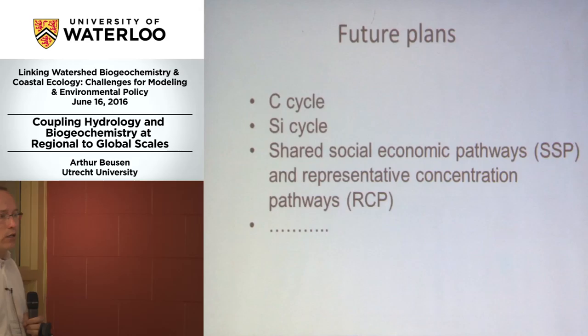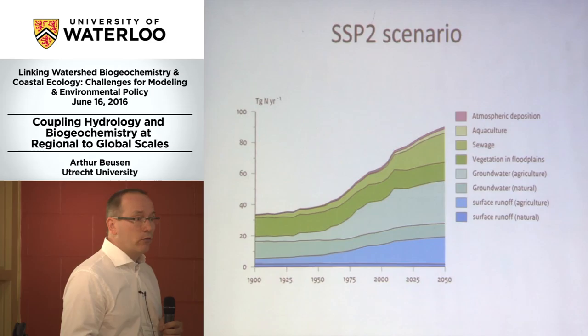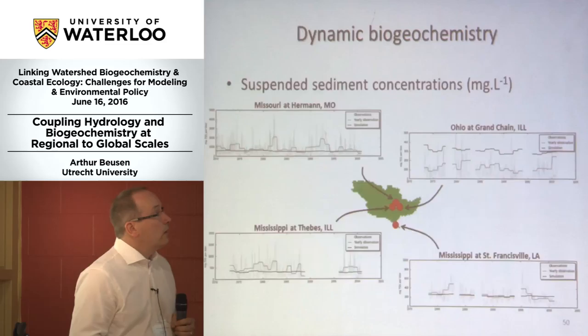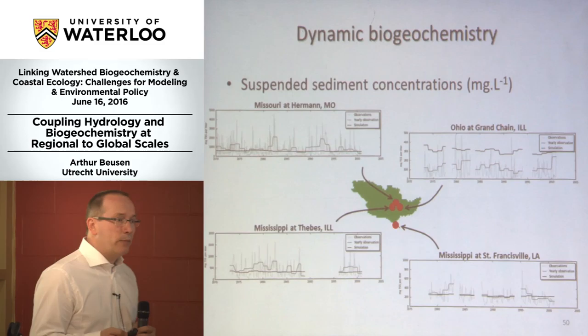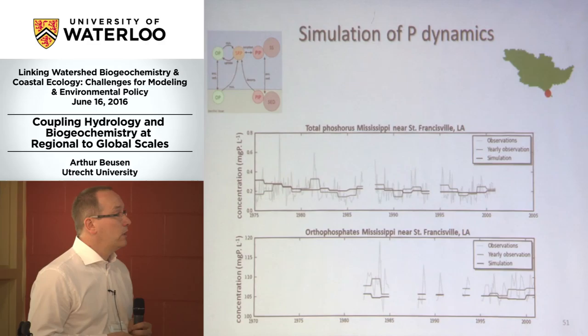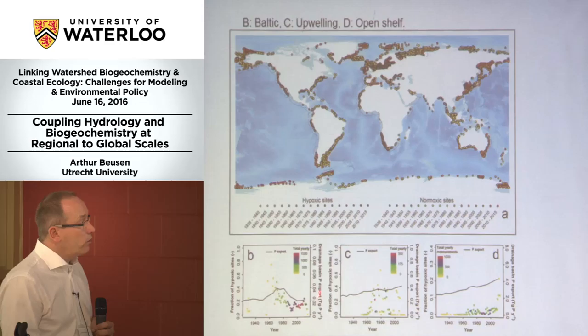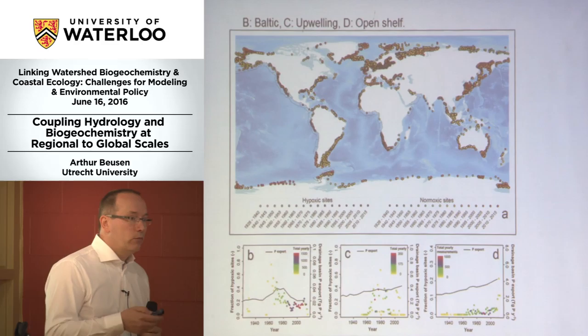I want to do the carbon cycle. I want to do the silica cycle. And of course scenarios — but I won't go into scenarios here. This is a result for delivery to rivers with scenarios from 2000 to 2050, and you see that aquaculture is coming up. We are working on dynamic biogeochemistry in rivers, starting with the Mississippi, where we first worked on suspended sediments — because if we can do that, we can do something about total phosphorus. We can also look at historical P export versus the occurrences of hypoxia, but there's no time for that. So I want to conclude — and I'll leave it to that.